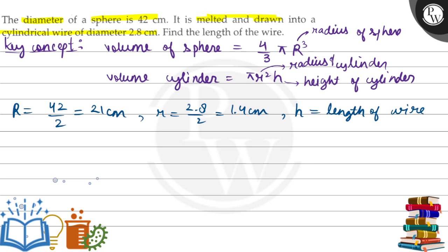Now let's solve. In the question, it is given that the sphere is melted. When it's melted, the volume remains constant. Since we melted it and made a wire from it, the volume remains constant. This means volume of sphere will be equal to volume of cylinder.